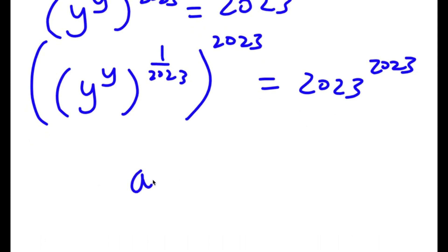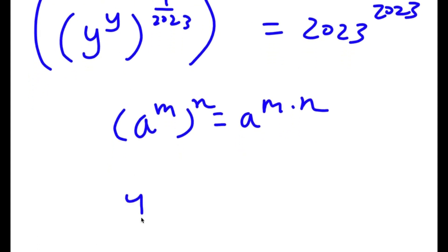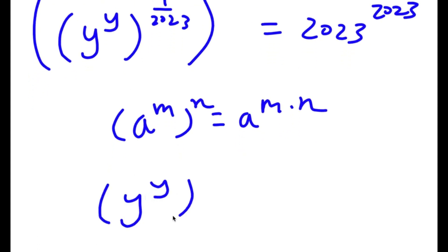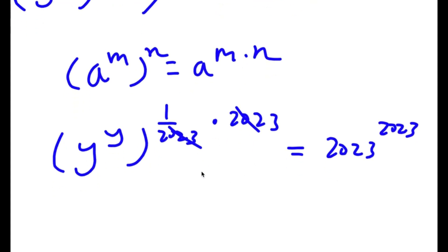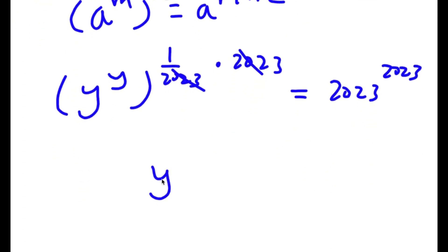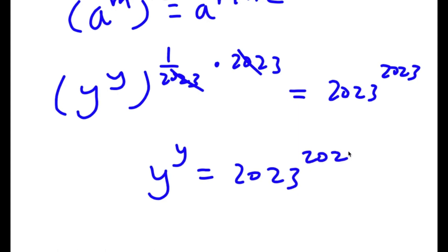Now, if I have something in the form a to the power of m to the power of n, this equals a to the power of m times n. So y to the power of y to the power of 1 over 2023 times 2023 equals 2023 to the power of 2023. The 1 over 2023 and 2023 cancel out, leaving y to the power of y is equal to 2023 to the power of 2023.